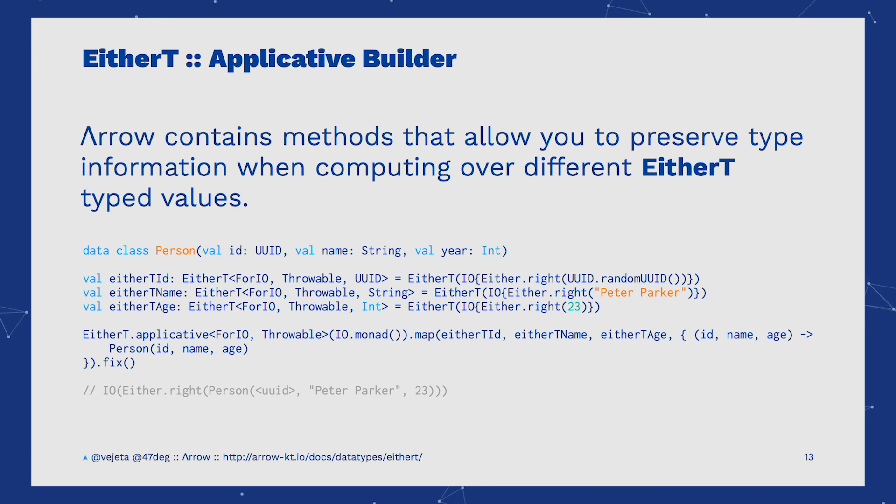In this example, we have several EtherTs with UUID string and int in the right values. With Arrow, we can map over all three of them with the applicative builder. If they all contain right values, we can compose them inside a new data class, where we see that the types are preserved.